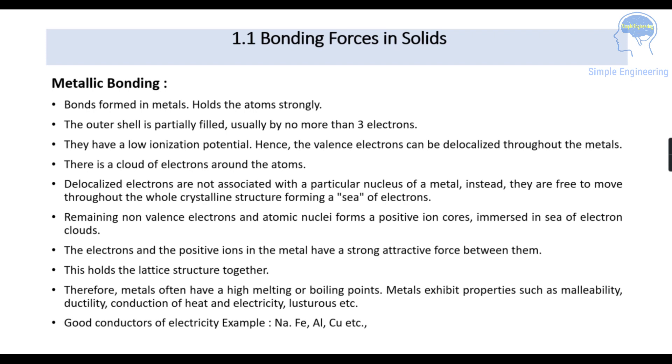Next is metallic bonding. The bonds formed in metals hold the atoms strongly. The outer shell is partially filled, usually by no more than three electrons in the outermost shell, and they have a low ionization potential. Hence the valence electrons can be delocalized throughout the metals. There is a cloud of electrons around the atoms. Delocalized electrons are not associated with a particular nucleus of a metal.